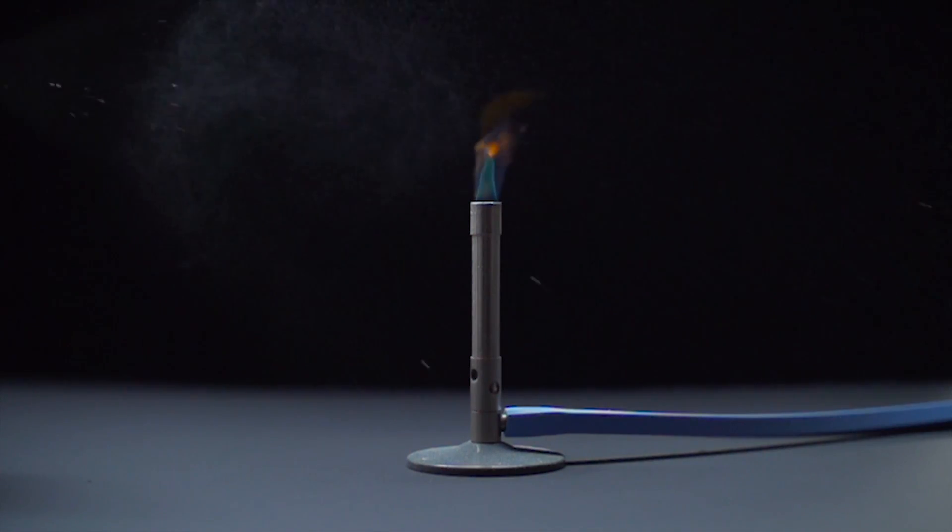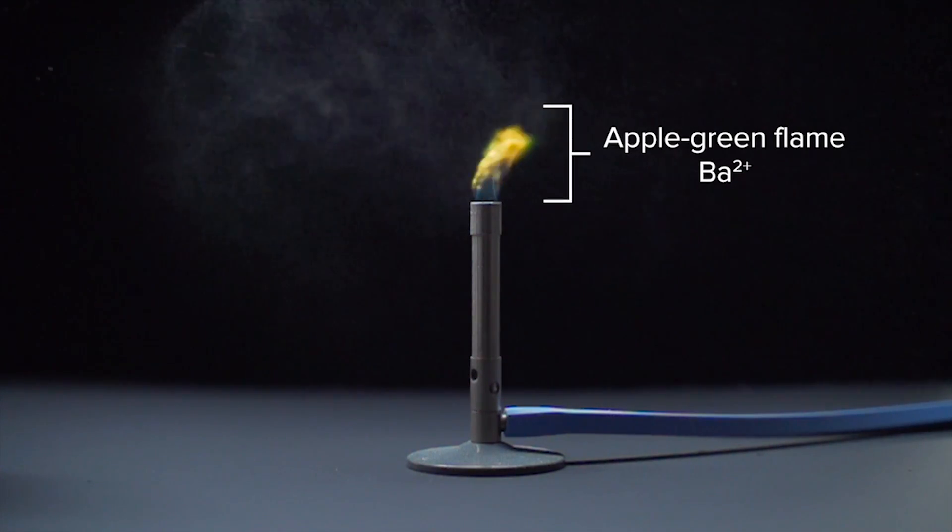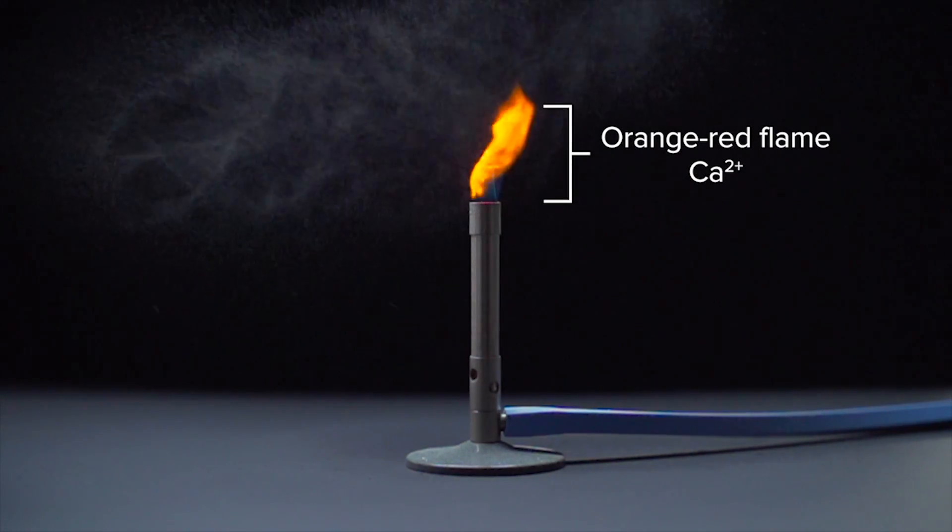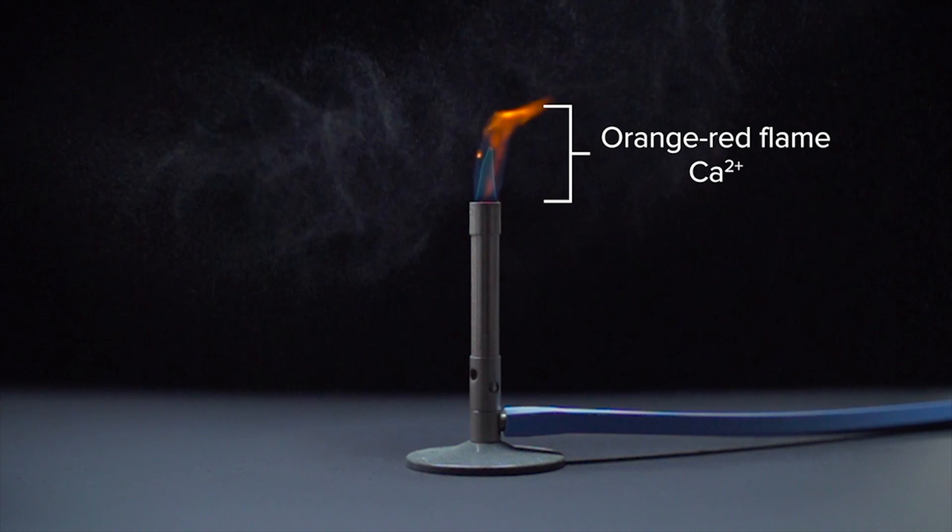If the flame is apple green then it contains barium ions. And if it is orange-red when the sample is sprayed it contains calcium ions.